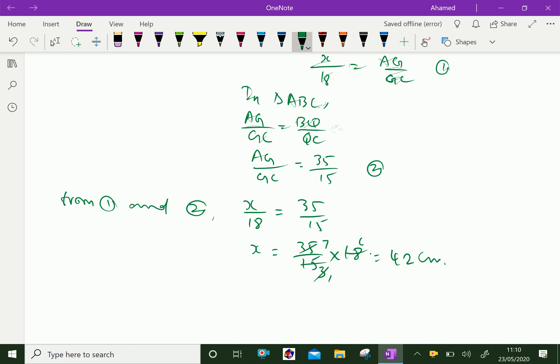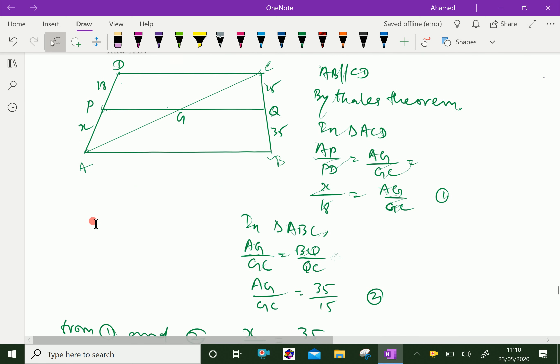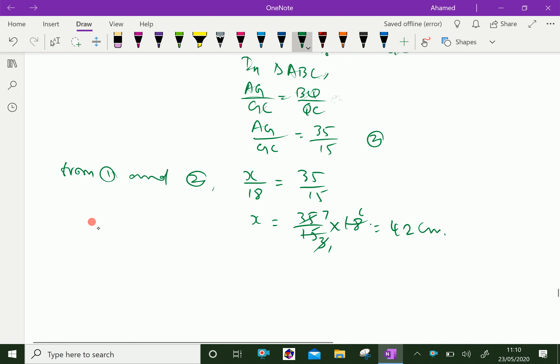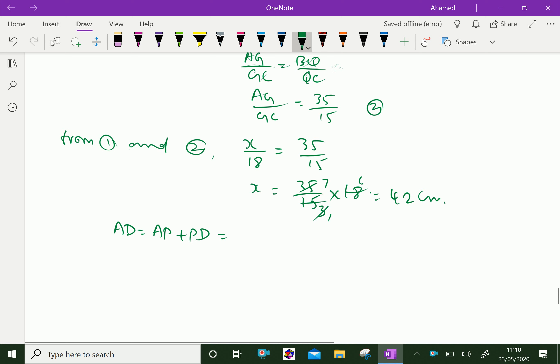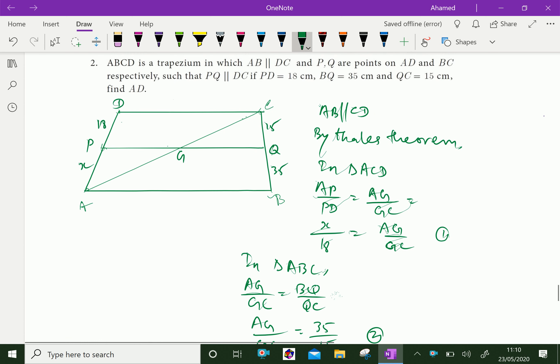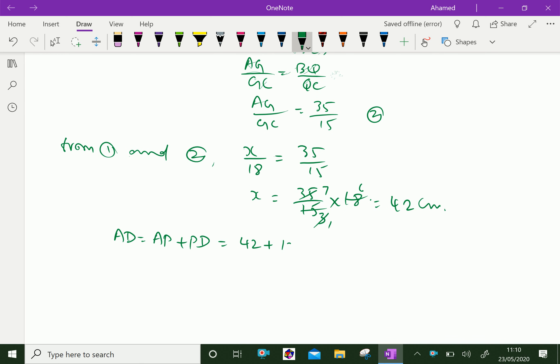Then, they are asking, find AD. Here, AD is AP plus PD. AD equal, we need AD equal AP plus PD, which is equal, AP is X. That is, AP is X means 42 plus PD is 18, which is equal 60 centimeters. We got.